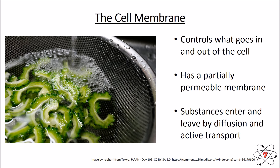Our next organelle is the cell membrane. But hang on — what's this strange picture? A colander and food? Well, they both do the same job. The colander allows things to pass through it, and the cell membrane allows things to pass through it. Only small things can pass through a colander, and only small things can pass through the cell membrane — big things are not getting through. The cell membrane works by allowing things through through the process of diffusion and active transport, which we'll look at in a later lesson. Because the cell membrane and the colander only allow certain things to pass through, we call them a partially permeable membrane.